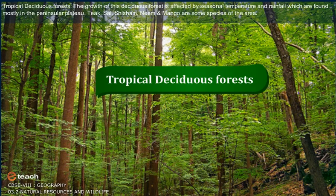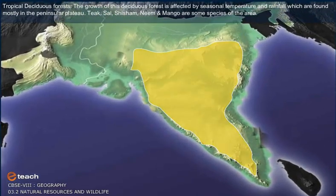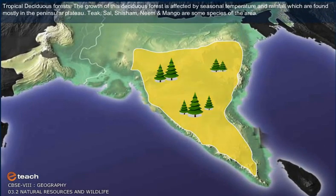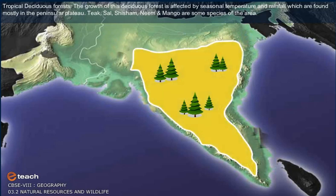Tropical Deciduous Forest. The growth of this deciduous forest is affected by seasonal temperature and rainfall. These forests are found mostly in the peninsular plateau. Teak, sal, shisham, neem and mango are some species of the area.